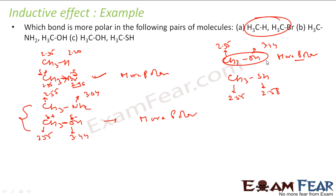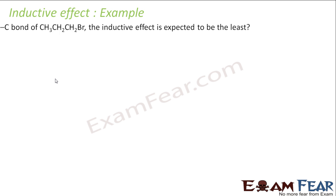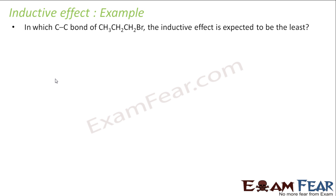So the key rule is: with carbon bonded to another atom, find the difference in electronegativity. The bond with the maximum difference in electronegativity is the more polar bond. Let's take another example.